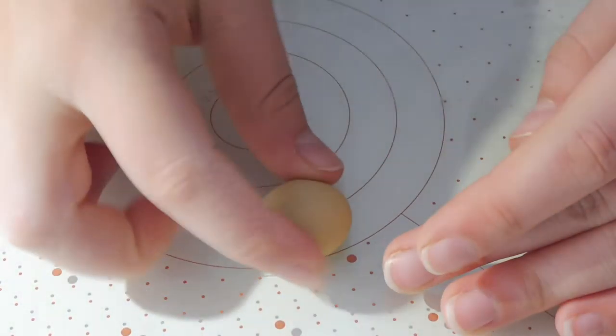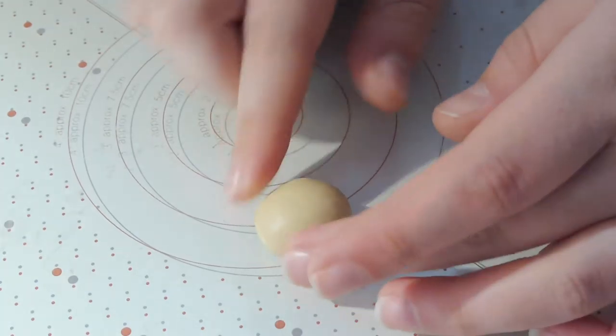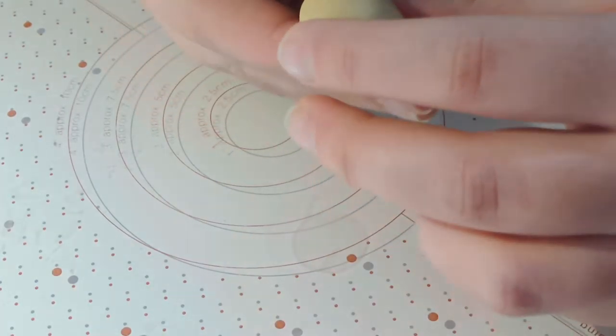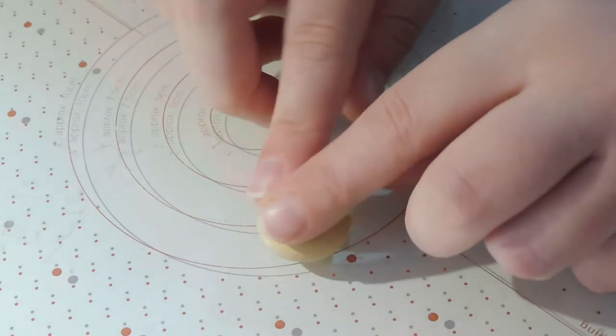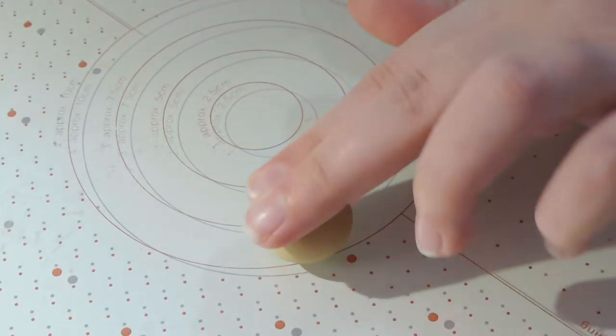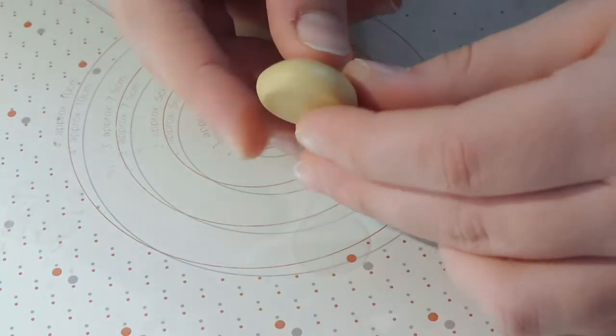And just keep pushing the sides, pushing them down, rounding it up until you get a nice little dome shape which will be our mushroom head basically. And there you go.